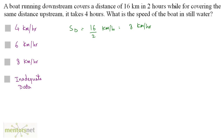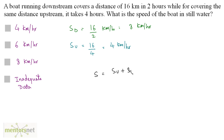While covering the same distance upstream it takes 4 hours. So we can calculate the upstream speed — that's 16 kilometers by 4 hours, and that is equal to 4 kilometers per hour. Now this is very simple. The speed of the boat in still water is equal to the upstream speed plus the downstream speed divided by 2, and that's 4 plus 8 by 2, equal to 12 by 2, and that's 6 kilometers per hour.